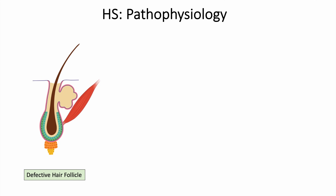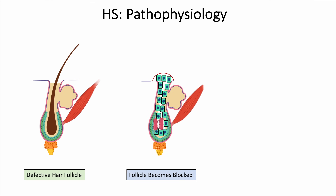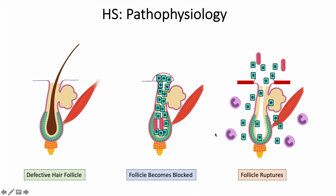The pathophysiology of hidradenitis suppurativa starts with a defective hair follicle in areas with high concentrations of apocrine sweat glands. This defective hair follicle becomes blocked, and many different epithelial cells and bacteria get in and start to cause inflammation. The follicle can then rupture, leading to surrounding inflammation, recruitment of immune cells, and drainage from the follicle. So it all starts with a defective hair follicle that becomes blocked and eventually ruptures.